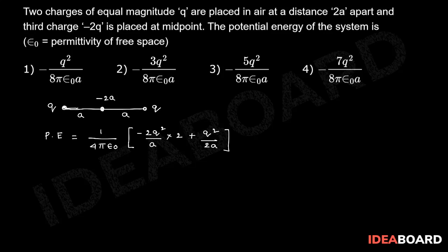That means the potential energy due to any two charges is equal to the expression 1 by 4 pi epsilon_0 into minus 4 plus 1 by 2.